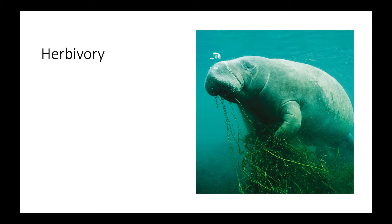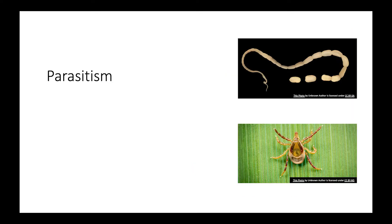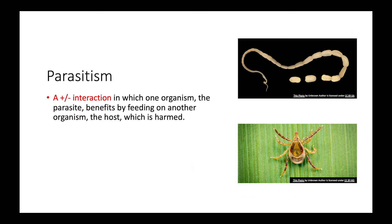Next is herbivory, which is another positive-negative interaction, where one organism eats part of a plant. With parasitism, that's also a positive-minus interaction in which one organism — the parasite — benefits by feeding on another organism, the host, which is in turn harmed by the parasite's feeding.